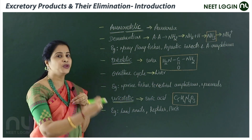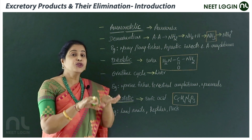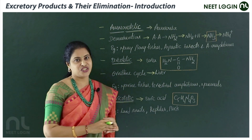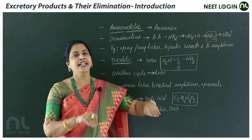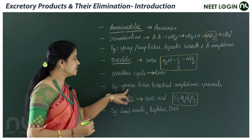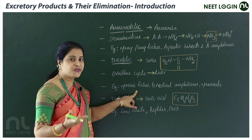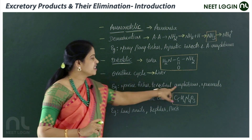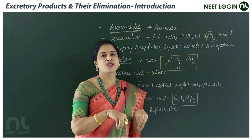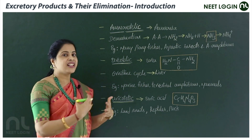Urea is moderately soluble, moderately toxic, and a moderate amount of energy is utilized for its elimination. Small amounts of water are needed to eliminate urea. Examples of ureotelic animals include marine fishes, cartilaginous fishes, terrestrial amphibians — including our frog — and mammals, including human beings, whose chief nitrogenous waste is urea.